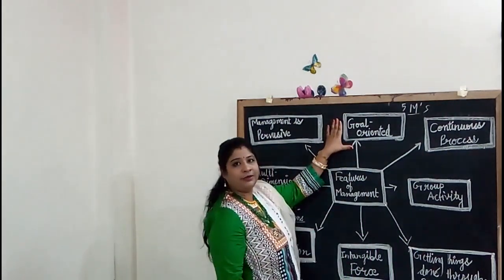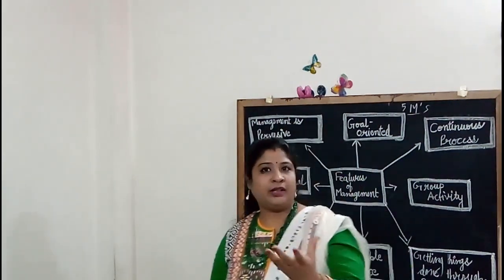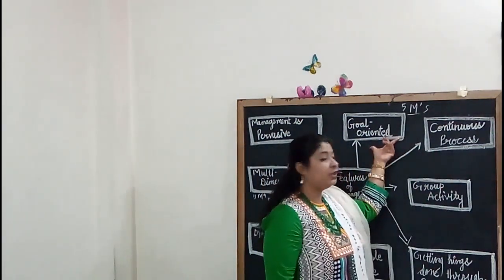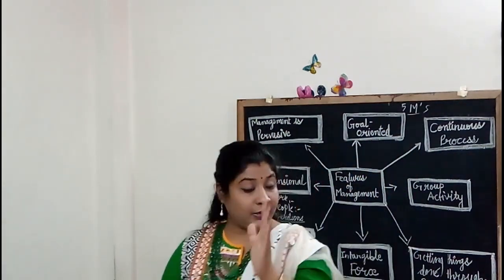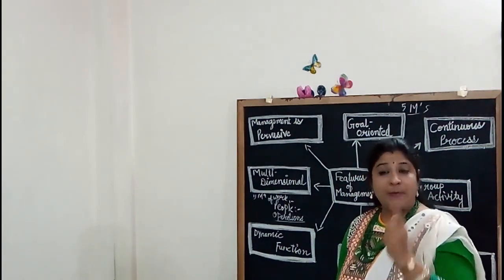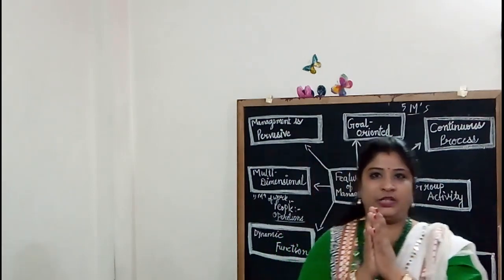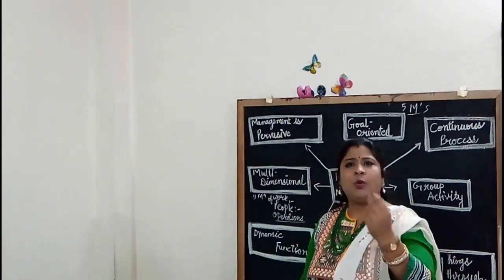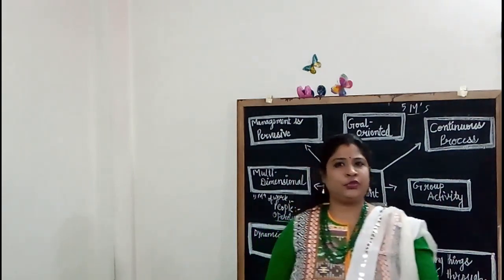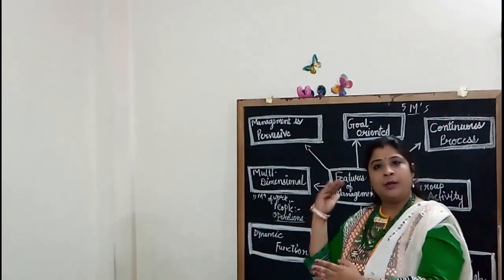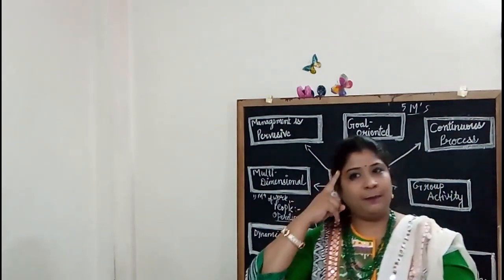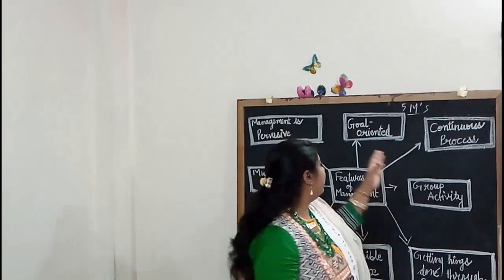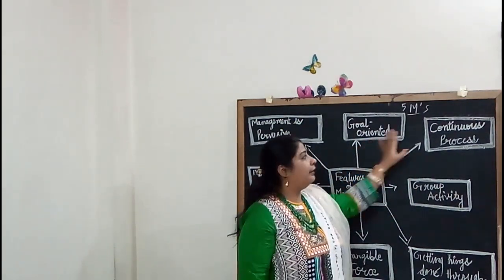The second characteristic is that management is Goal-Oriented. Every organization works with pre-determined objectives or goals, and management helps to achieve those goals timely and smoothly. An organization has a set of basic goals which are the basic reasons for its existence. Management unites the efforts of different individuals in the organization towards achieving these goals. For example, if the objective of a company is to sell 1000 units, the manager will plan the course of action, motivate all employees and organize all resources keeping the main target in mind. Management is goal-oriented.